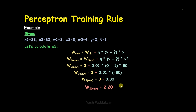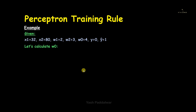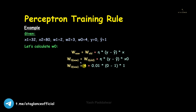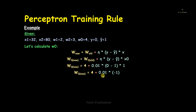Now let's calculate the new value for w0. The formula is w0_new = w0_old + eta × (y − y_hat) × x0. Remember, x0 is the virtual input whose value is always initialized to 1. Filling in: w0_new = 4 + 0.01 × (0 − 1) × 1 = 4 − 0.01 = 3.99. So the new value of w0 is 3.99.